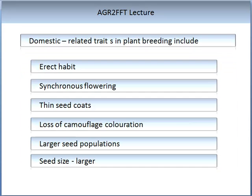Let us look at some of the traits that we might want to include in a breeding program: an erect habitat; flowering that occurs all at the same time; seed coats that are thin; a camouflage colouration; large seed populations; and larger seed size, so they can be mechanically sown much easier. There have been some positives and negatives from empirical breeding.